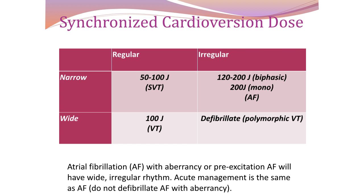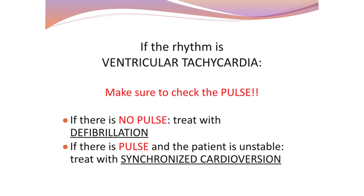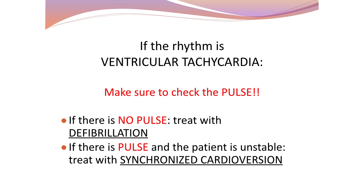There is also another wide irregular rhythm: atrial fibrillation with aberrancy or pre-excitation AF — in this situation treat as in AF. An important reminder: in ventricular tachycardia, always check the pulse. If there is no pulse, treat with defibrillation. If there is a pulse and the patient is unstable, give synchronized cardioversion.